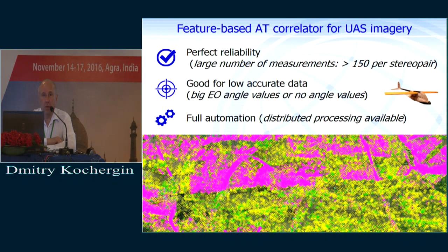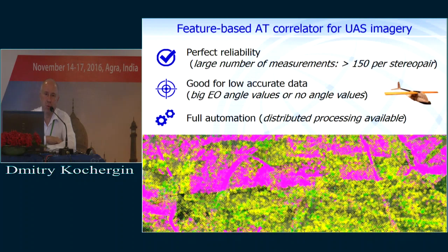This is the illustration of how the new correlator works. It is non-surface and object-oriented, and the reliability of measurements is much higher. Now we can measure a greater number of points, and most importantly, reliability and accuracy for low-quality images — images with high angles of external orientation — for everything very specific for UAV, this algorithm works much better, including for low-quality data of external orientation.